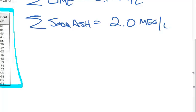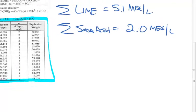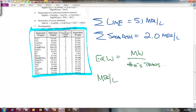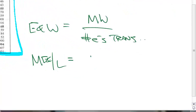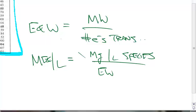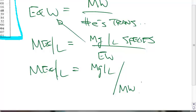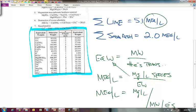Going back to the notes — which I couldn't find at first but finally located — equivalent weight is equal to the molecular weight divided by the number of protons transferred in an acid-base reaction, or the number of electrons transferred in a redox reaction. And milliequivalents per liter equals milligrams per liter of the species divided by the equivalent weight, which is the molecular weight divided by the number of electrons transferred.